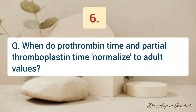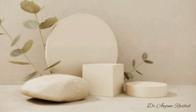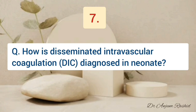When do prothrombin time and partial thromboplastin time normalize to adult values in an infant? Prothrombin time reaches adult values at about one week of age, whereas partial thromboplastin time does not attain adult values until two to nine months of age.